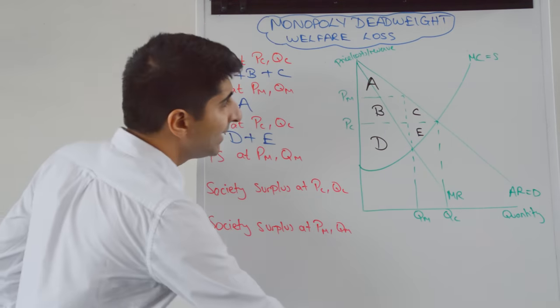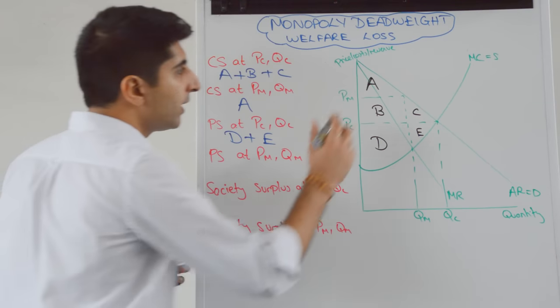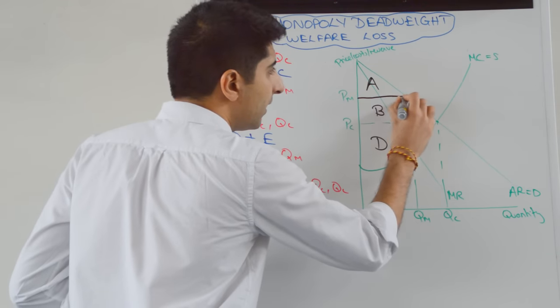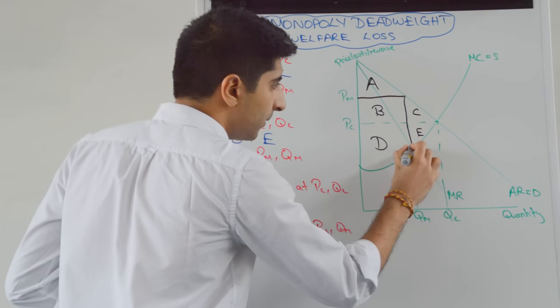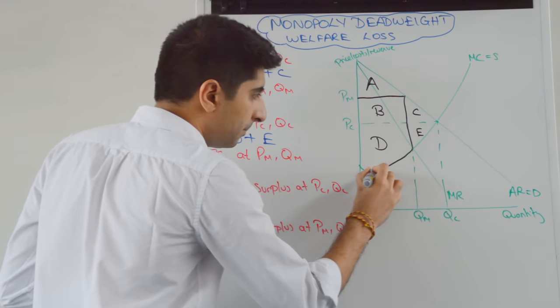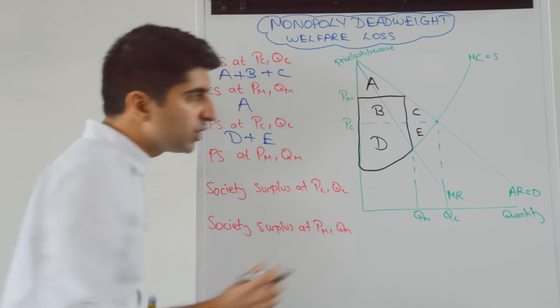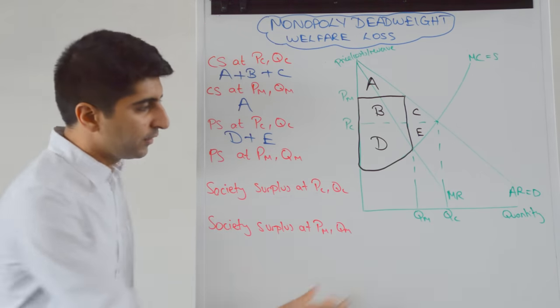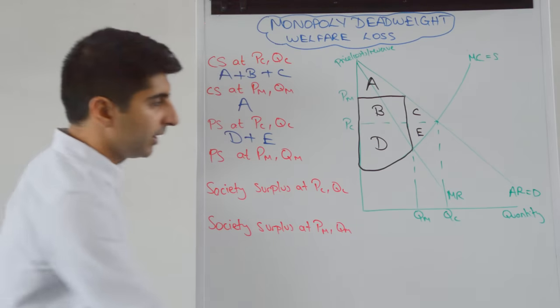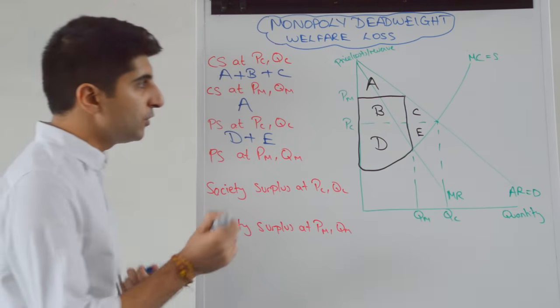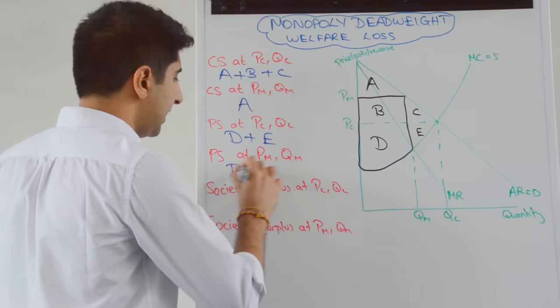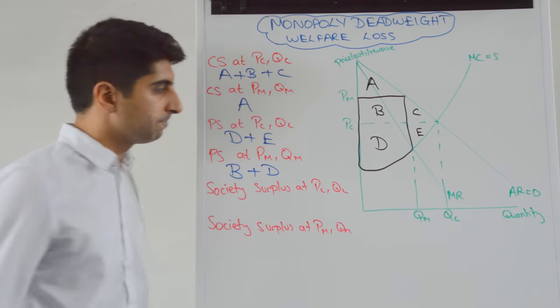So if I actually do that in terms of an area, that will give us this area. So the area beneath the price line but above the supply curve. Crucially though, within the confines of the quantity being produced by the monopolist. And that gives us a producer surplus which is now B plus D.